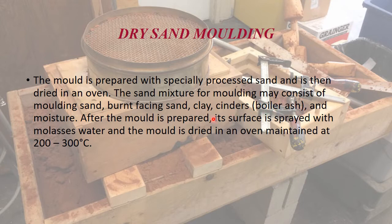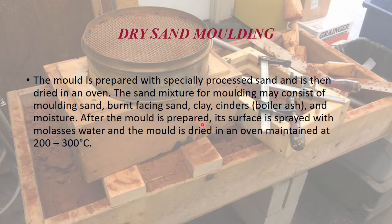After the mold is prepared, its surface is sprayed with molasses water and then dried in an oven at 200 to 300 degrees centigrade until moisture is completely eliminated. These molds can be held for any length of time before pouring, provided they are kept dry.